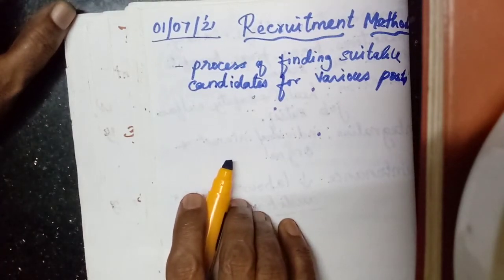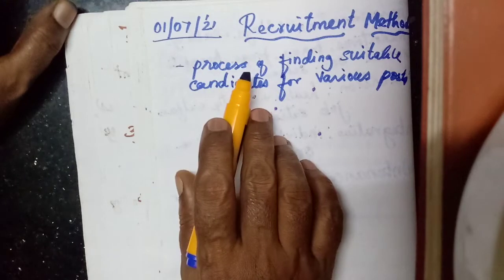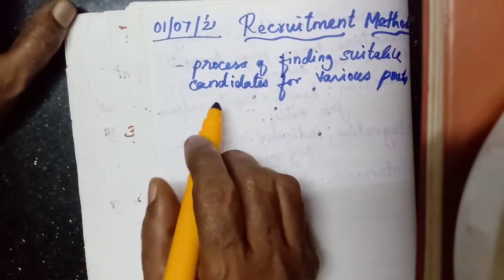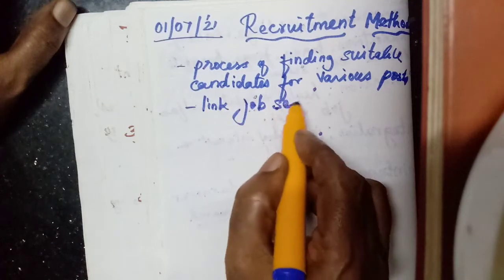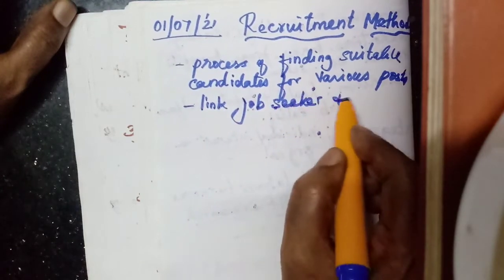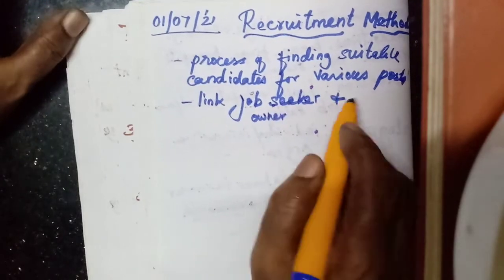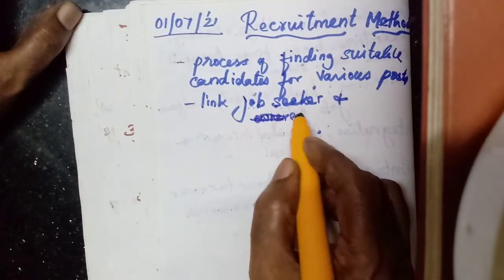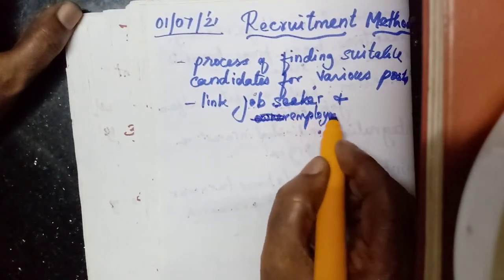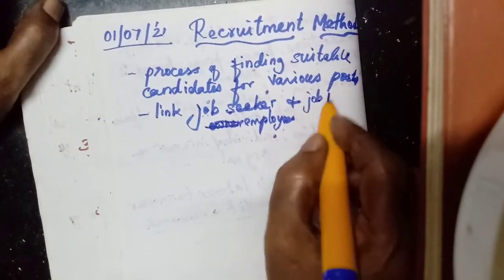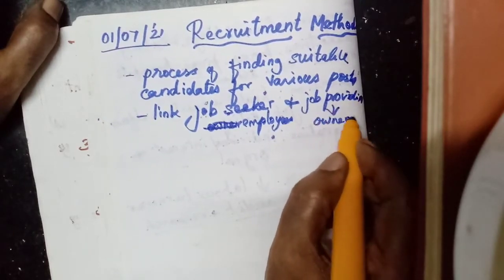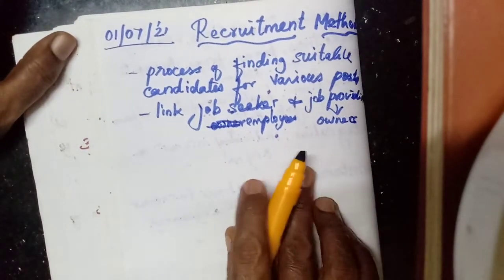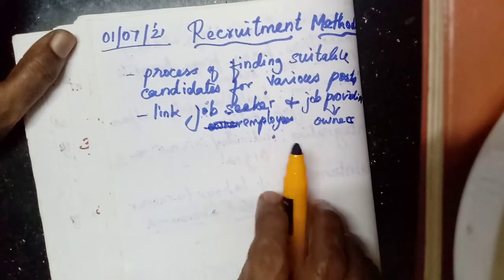All the workforce that is needed for an organization must be found out by the management — that is called recruitment. We can say it is an act or a link between the job seeker and the job provider. The job seeker is the employees, and who is providing the job for the job seekers? They are the owners — we can say the management. It is connecting the job seekers and the job providers.